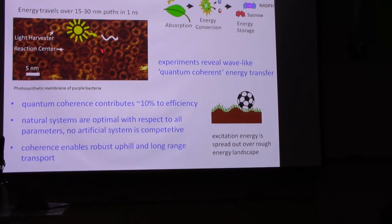And so here's a cartoon for a bacterial system, where the energy might be absorbed here from the sun, and it will be transferred over here to the reaction center. So that's distances of up to 30 nanometers. Energy travels over here in one nanosecond. And experiments, which I'll summarize only very briefly, reveal that this transport has wave-like or quantum coherent energy transfer.